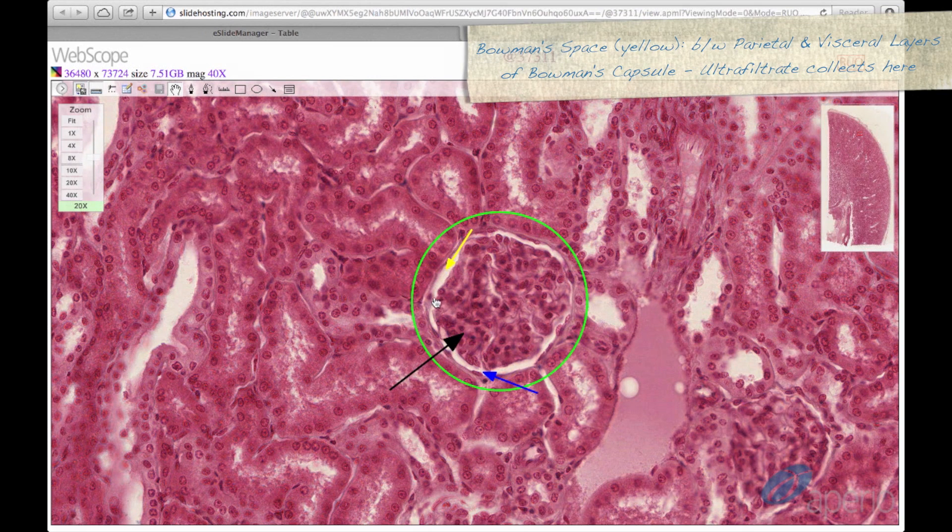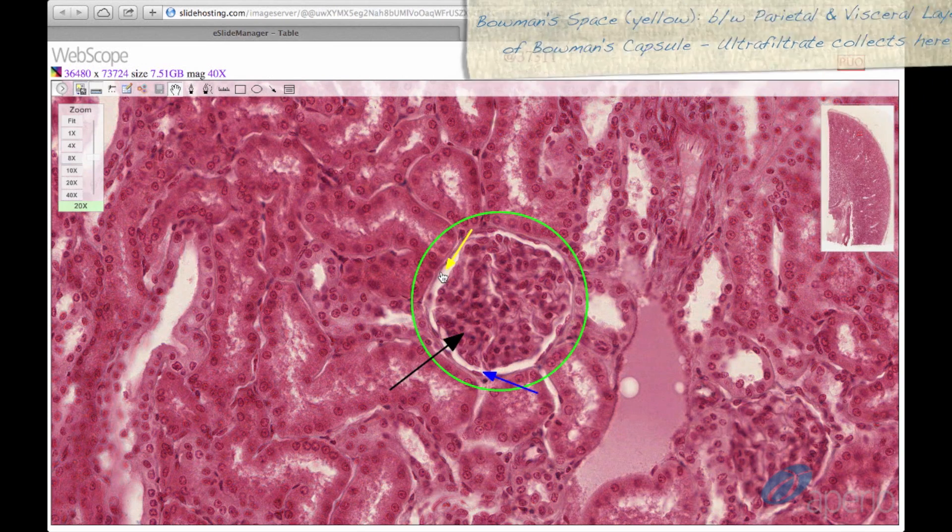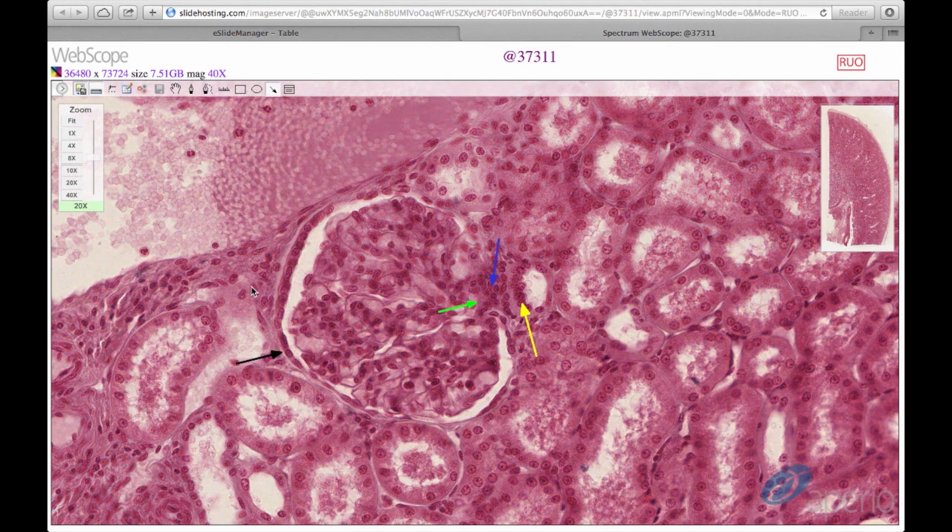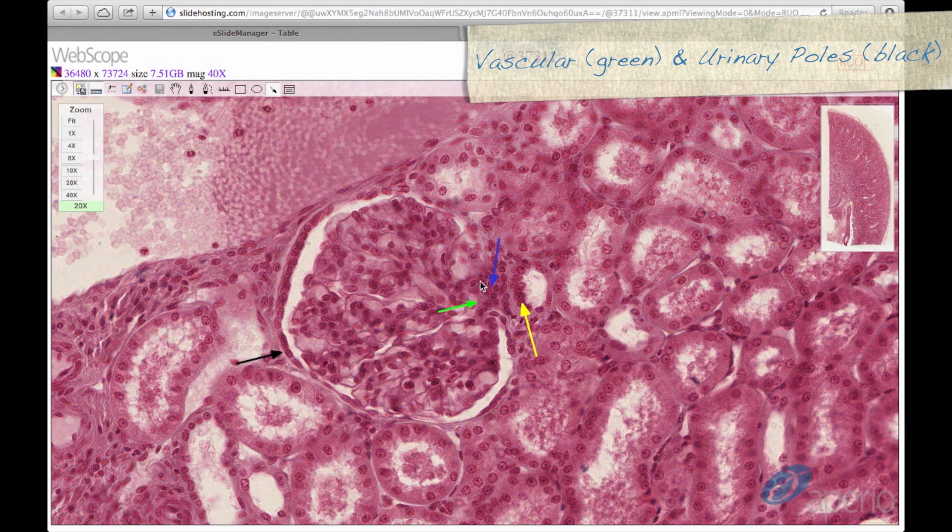Bowman's space is located between the parietal and visceral layers of Bowman's capsule and is the collection point for ultrafiltrate. We have moved to a different section to better visualize the vascular and urinary poles of the renal corpuscle. The renal corpuscle has a vascular pole at the green arrow and a urinary pole opposite the vascular pole at the black arrow.